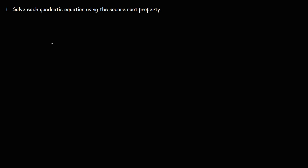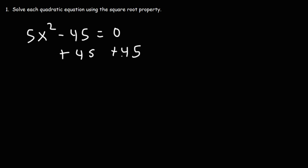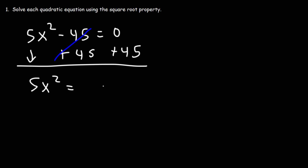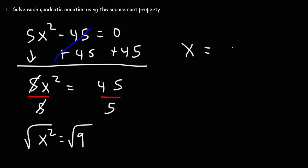Now let's try another problem. Let's say we have 5x squared minus 45 is equal to 0. Go ahead and solve the quadratic equation using the square root property. In this problem, what I prefer to do is add 45 to both sides, so we'll have 5x squared is equal to 45. After that, we divide both sides by 5, so x squared equals 45 divided by 5, which is 9. Then we take the square root of both sides, and we get plus or minus 3.